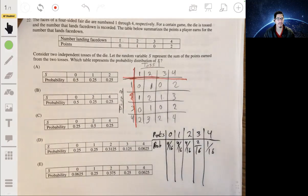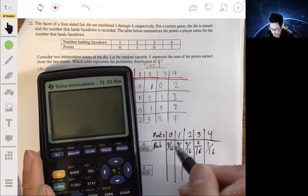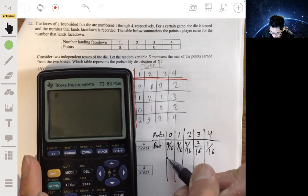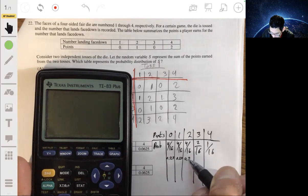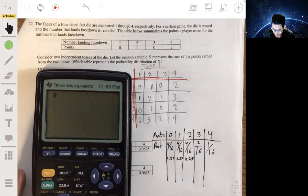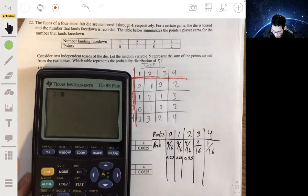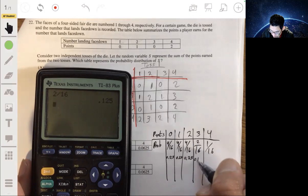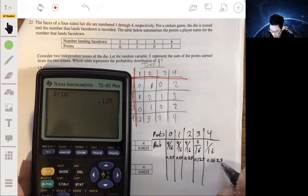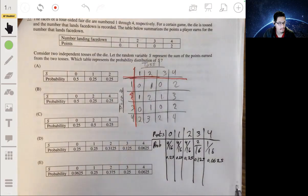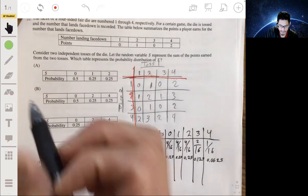So this is our probability table. And let's just convert these to decimals. So these are 0.25, that'll be 0.125, and half of 0.125, 0.0625. And it looks like this will be D. So the answer will be D.